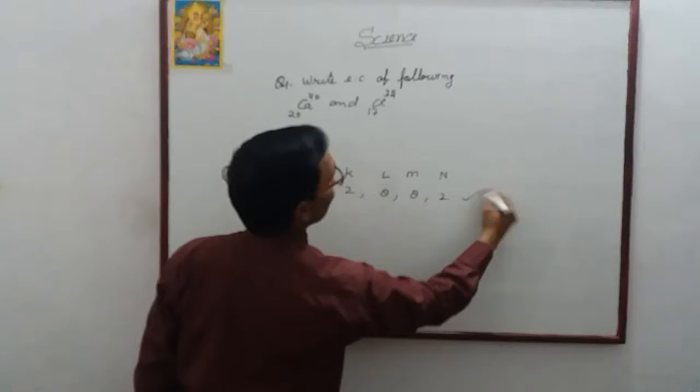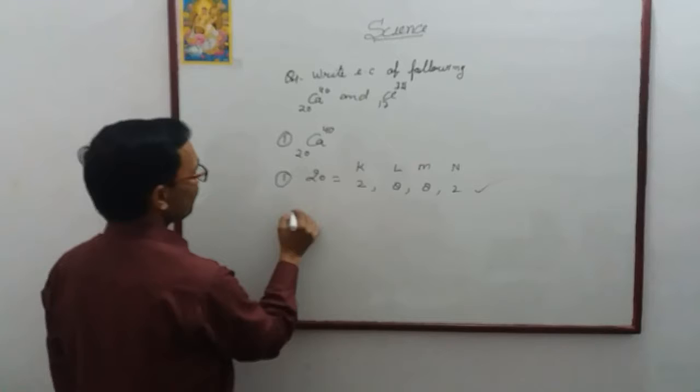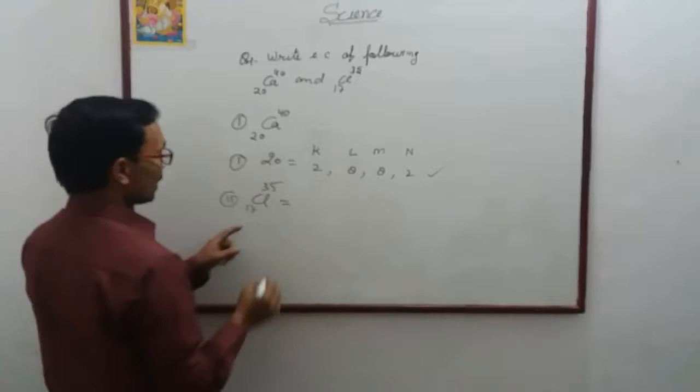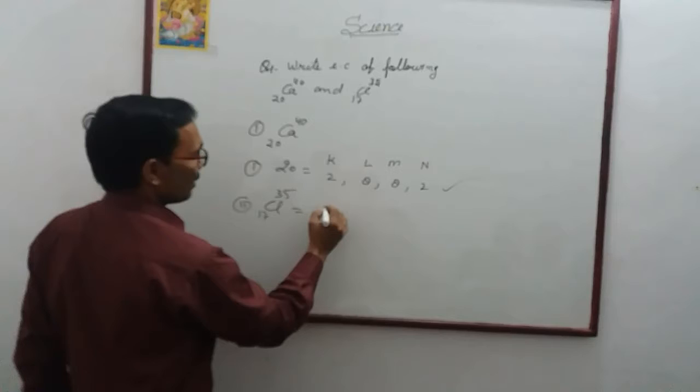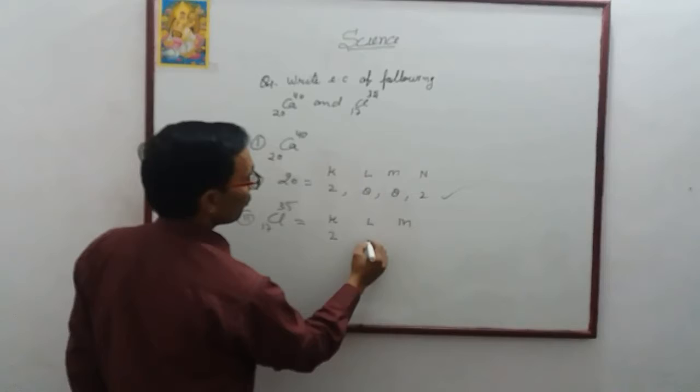Now, Chlorine. How many electrons are there? 17. Then, doing the electronic configuration of 17. Number of protons here, also 17. The electronic configuration of 17: 2, 8, and 7.